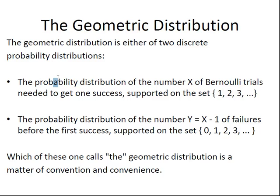The name geometric distribution describes two different things. The probability distribution of the number X of Bernoulli trials needed to get one success, supported on the set {1, 2, 3, ...}. That's a very formal definition.